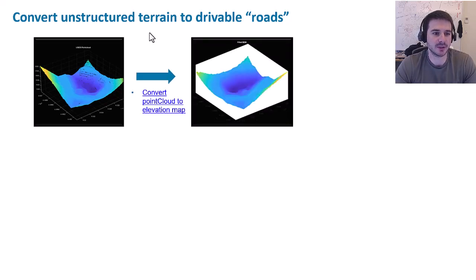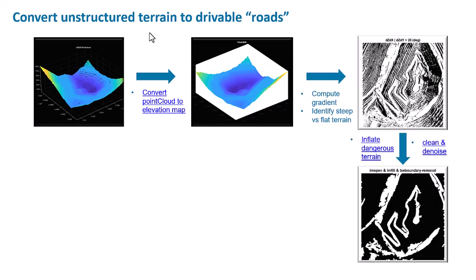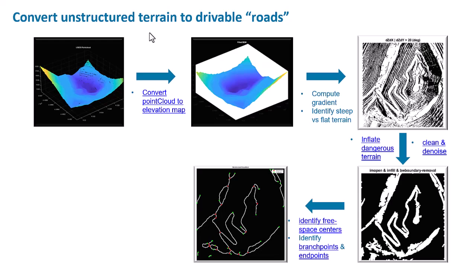We first convert that point cloud to an elevation map. From there, we use a gradient and a threshold to determine what is too steep to traverse, and by doing this you can see the beginnings of a road network start to emerge. Once done, we apply morphological operations on this binary mask to clean up the image and solidify boundaries of safe versus dangerous terrain. Additional morphological operations help us identify endpoints or branch points within this network — basically shrinking the free-space image down to a set of line segments, which starts to look much more like something you might see in Google Maps.